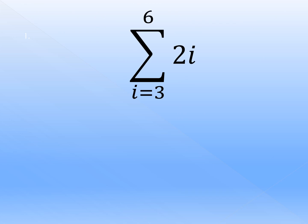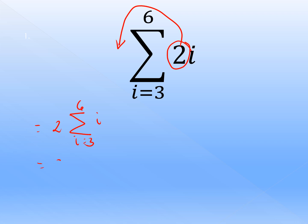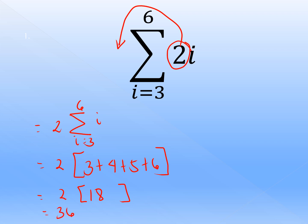Let's try another example. Given summation of 2i where i starts from 3 up to 6. Using the first property, we place 2 outside: 2 times summation of i where i starts from 3 up to 6. Expanding gives 2 times (3 plus 4 plus 5 plus 6). Simplifying: 3 plus 4 is 7, plus 5 is 12, plus 6 is 18. So 2 times 18 equals 36. Therefore, the answer for summation of 2i where i starts from 3 up to 6 is 36.